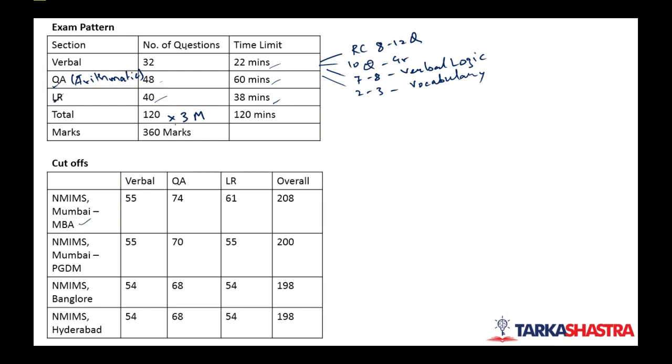Not because of the high number of questions and low amount of time. Also the difficulty level of the questions in verbal is very high. And to score 55 marks - 32 questions into 3 marks will be 96 marks. So out of 96 marks we need to score 55 marks which is approximately 18-19 questions. So 19 questions getting it correct in 22 minutes is a big task in NMAT exam.